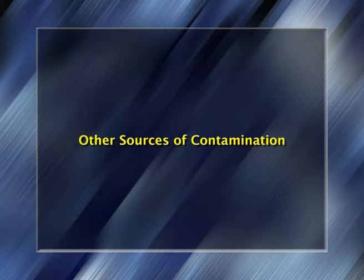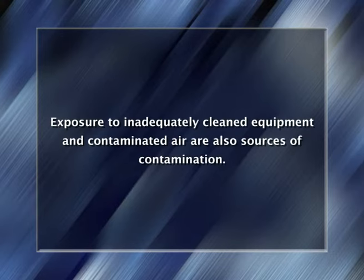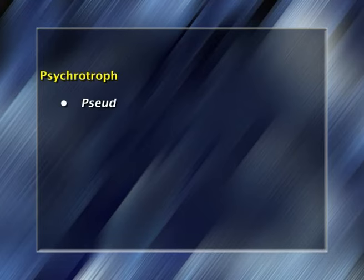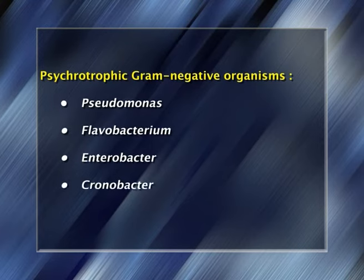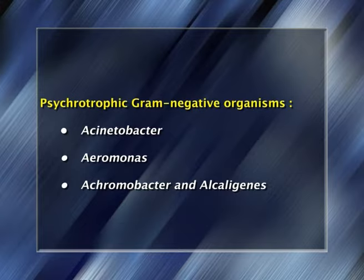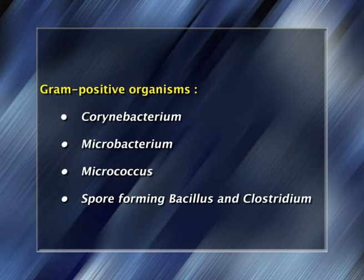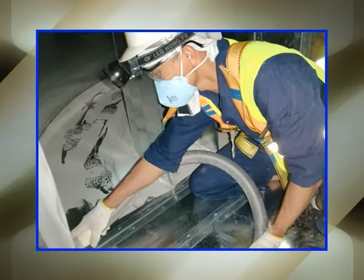Other sources of contamination: milking equipment and bulk storage tanks make a significant contribution to the psychrotrophic microflora of raw milk if not adequately sanitized. Milk residues on surfaces and in joints and rubber seals can support the growth of psychrotrophic gram-negative organisms such as Pseudomonas, Flavobacterium, Enterobacter, Cronobacter, Klebsiella, Acinetobacter, Aeromonas, Achromobacter, and Alcaligenes, and gram-positive organisms such as Corynebacterium, Mycobacterium, Micrococcus, and spore-forming Bacillus and Clostridium. These organisms are readily removed by effective cleaning and disinfection, but may build up as biofilms in poorly cleaned equipment.